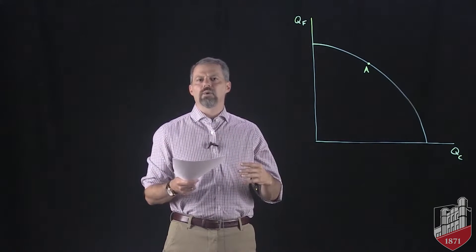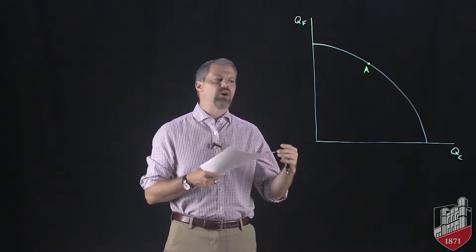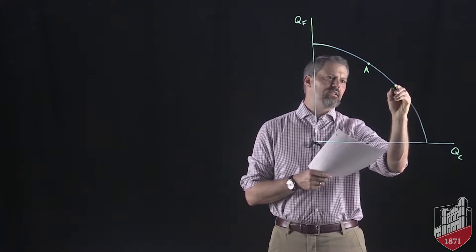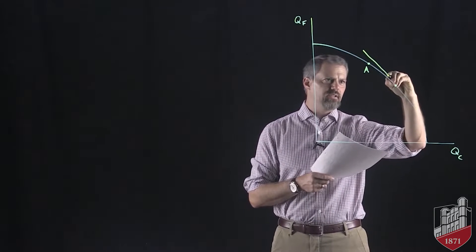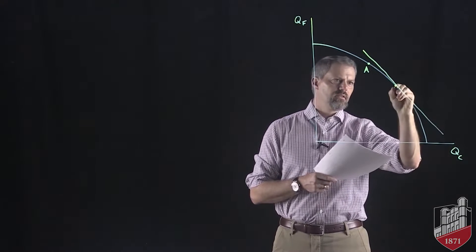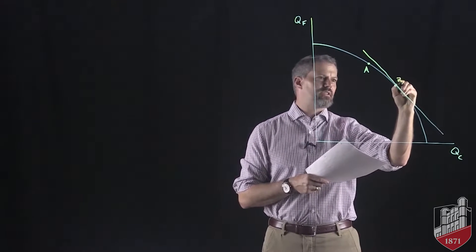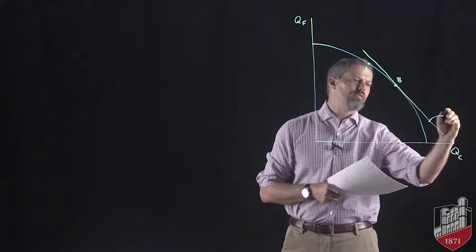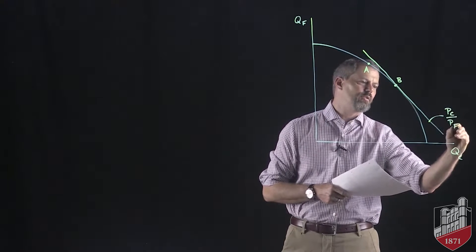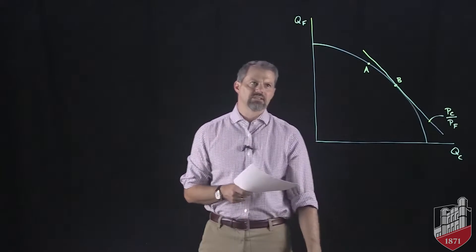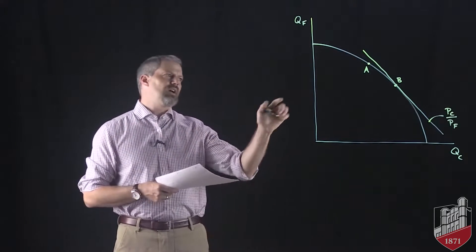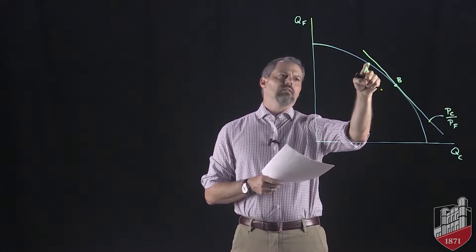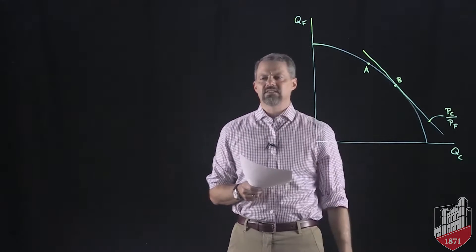And then let's suppose that trade gets opened up and it drives the relative price of cloth in this economy up. We end up now at a point of tangency between our budget constraint and our production possibilities curve right there at point B. A higher relative price of cloth. Remember that the slope of this is the price of cloth divided by the price of food. So the relative price of cloth has risen. Now after trade is opened up, the economy is producing at point B and point A was our original production and consumption point.